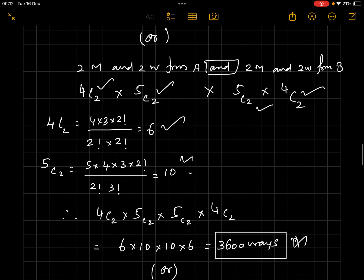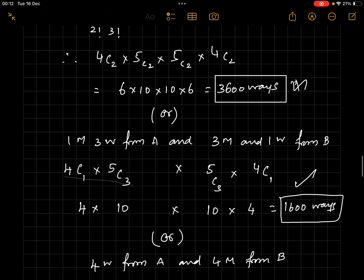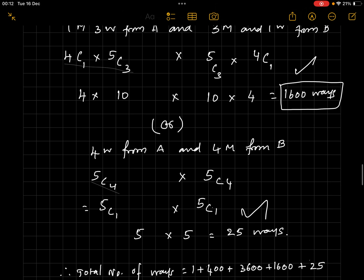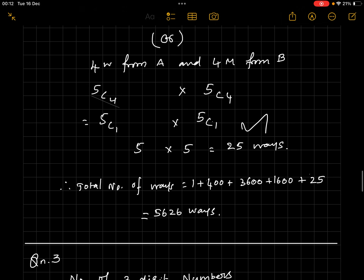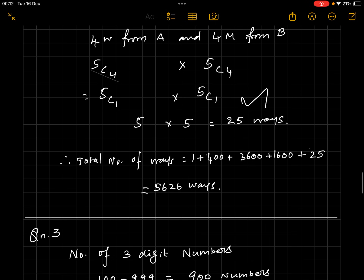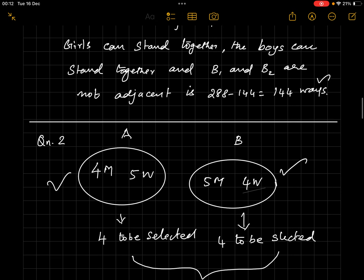These five cases are mutually exclusive — choosing one arrangement means you don't go to another — so we ADD them: 1 + 400 + 3,600 + 1,600 + 25 = 5,626 ways. This is why we use addition here: each case represents an 'or' scenario, mutually exclusive alternatives.